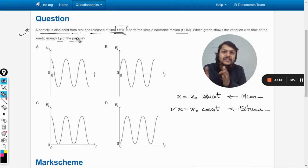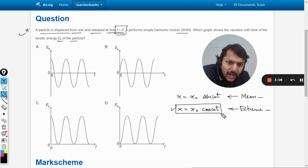We are using cosine because it is explicitly given in the question itself. The particle is displaced from rest—obviously it was at rest at the mean position, displaced to the extreme position, and then released at t equals zero.